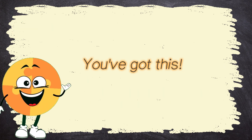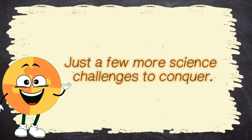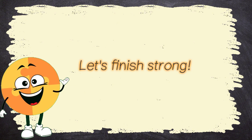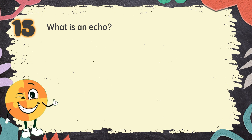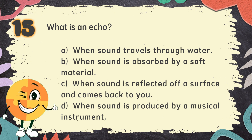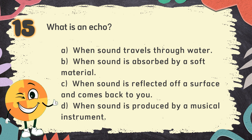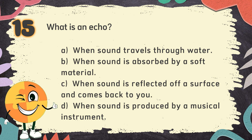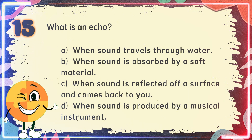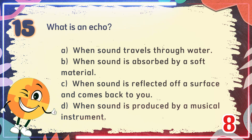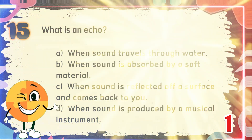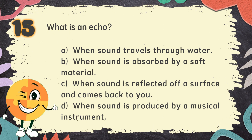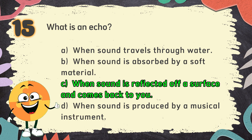Final stretch! You've got this! Just a few more science challenges to conquer — let's finish strong! Number 15. What is an echo? The choices are: A. When sound travels through water, B. When sound is absorbed by a soft material, C. When sound is reflected off a surface and comes back to you, D. When sound is produced by a musical instrument. The correct answer is C. When sound is reflected off a surface and comes back to you.